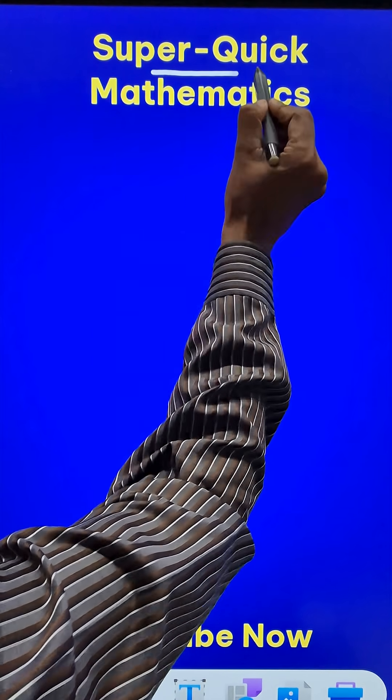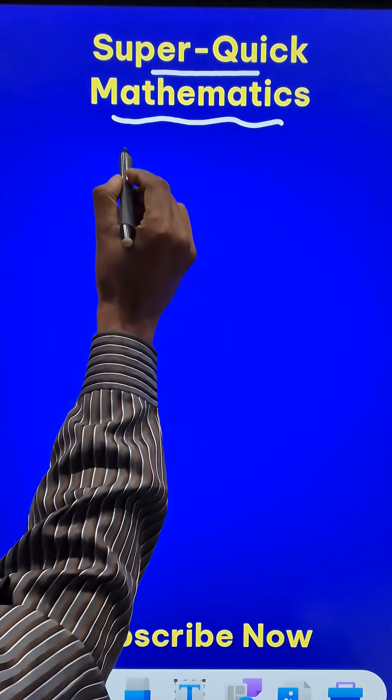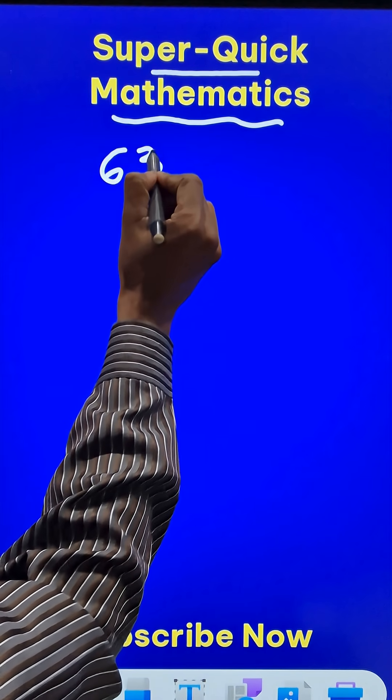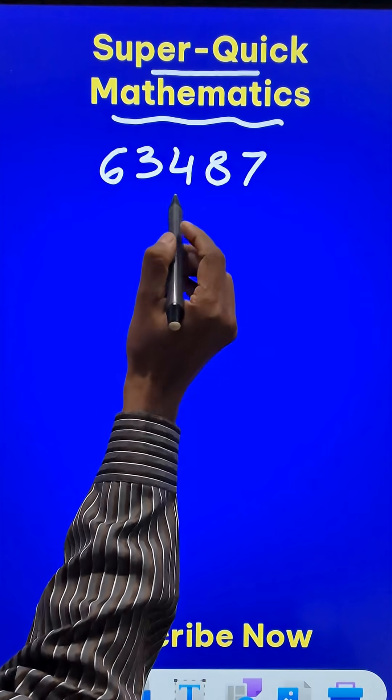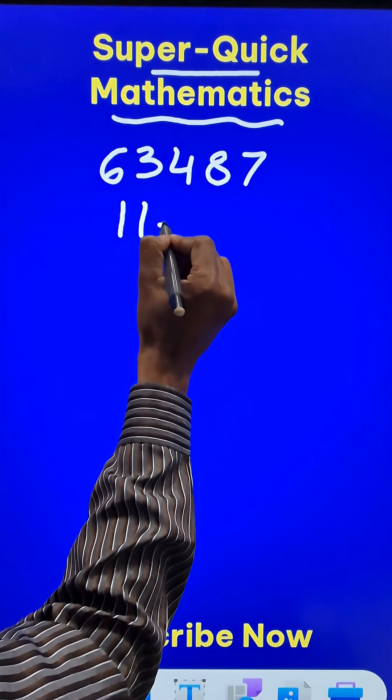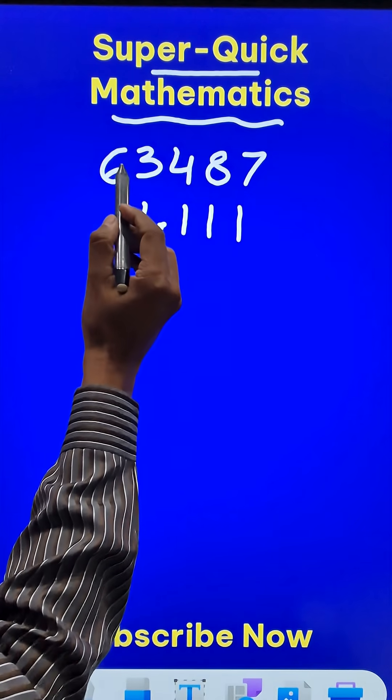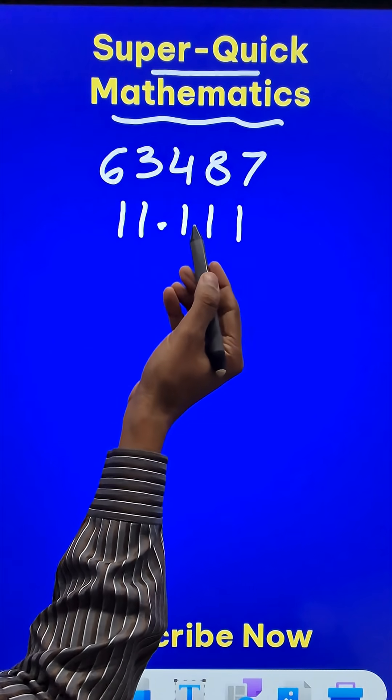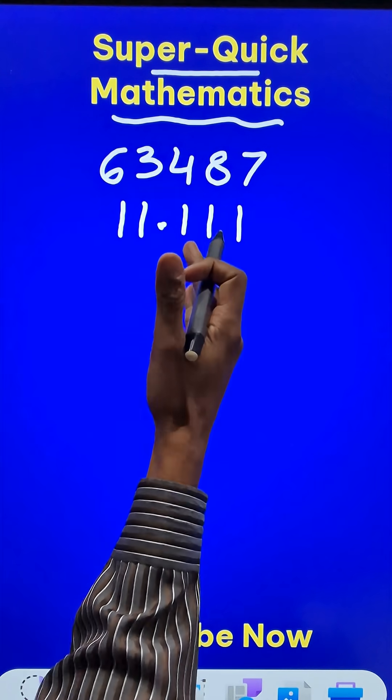Here is an example of super quick mathematics. Suppose you have a 5-digit number like 63487 and you need to multiply by a decimal which contains all ones like 11.111. So you can see 5 digits and 5 ones. Even if there are fewer ones, the trick works.